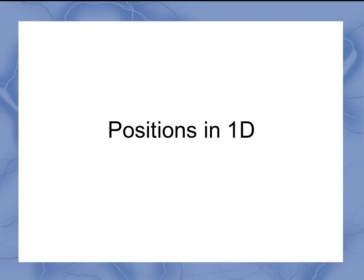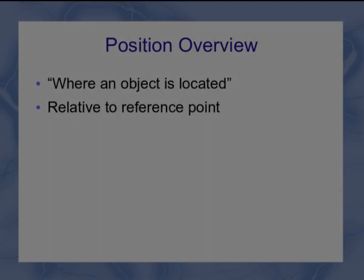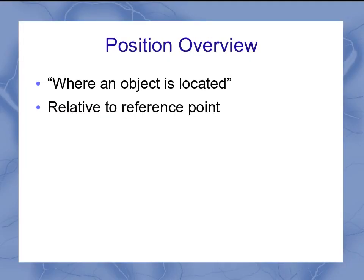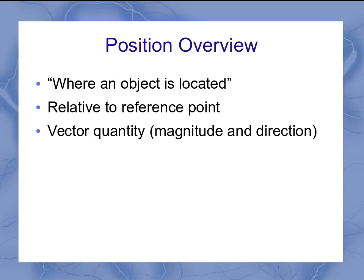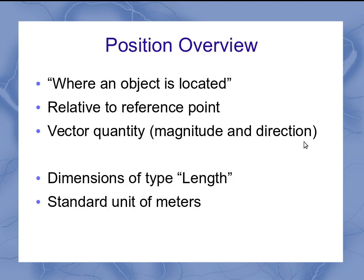Let's go over a little bit about positions in one dimension. Position is where an object is located, and it's always measured relative to some reference point. Because it's measured relative to a reference point, it ends up being a vector quantity — the magnitude is how far from the reference point, and the direction is which side of the reference point it is. It has a dimension of type length, and it always has standard units of meters.